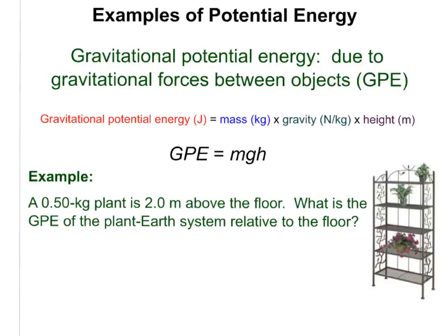Consider plants on shelves. This flowering plant has gravitational potential energy relative to the floor — let's say about 90 joules. But relative to the ceiling of the room, the gravitational potential energy might be around negative 40 or negative 50 joules. So we always need to state the reference — whether it's the floor, the ceiling, or the center of the earth — because it gives a different value.